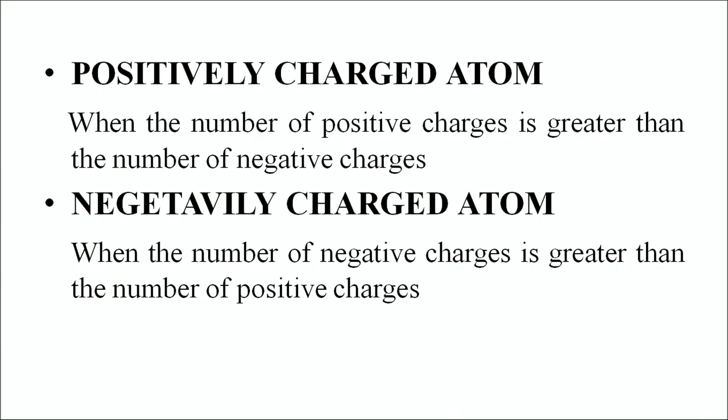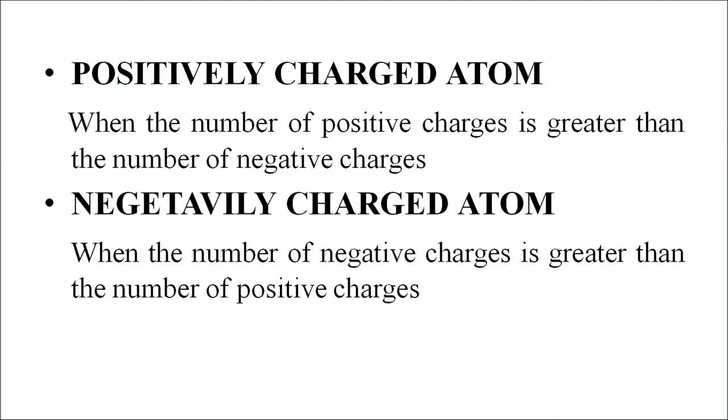A positively charged atom is one where the number of positive charges is greater than the number of negative charges — for example, sodium, known as a cation, represented as Na+. A negatively charged atom is one where the number of negative charges is greater than the number of positive charges — for example, the chloride ion, represented as Cl−.